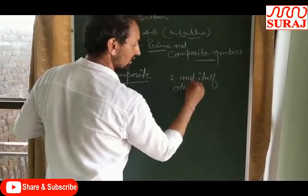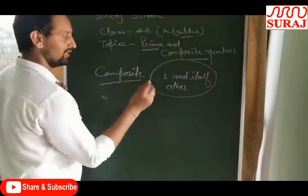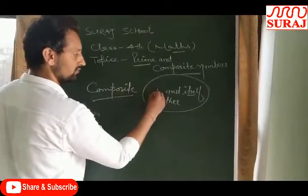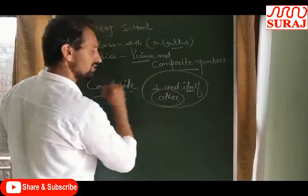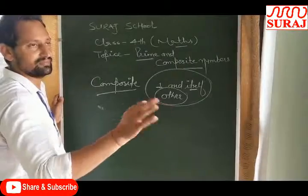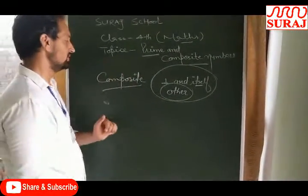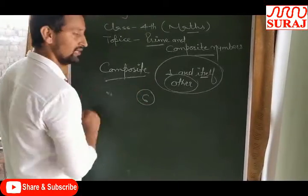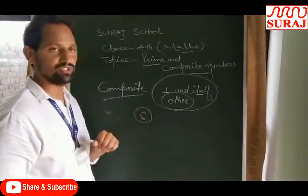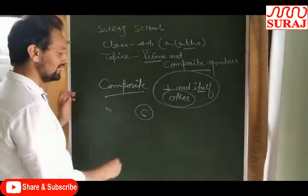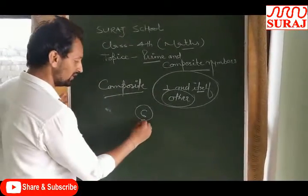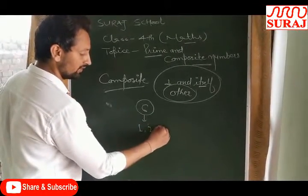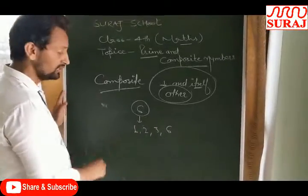How do we identify this? I have written 6. We should define whether a number is prime or composite. The prime number is divided by one and itself only. But 6 is divided by one, two, three, and six.